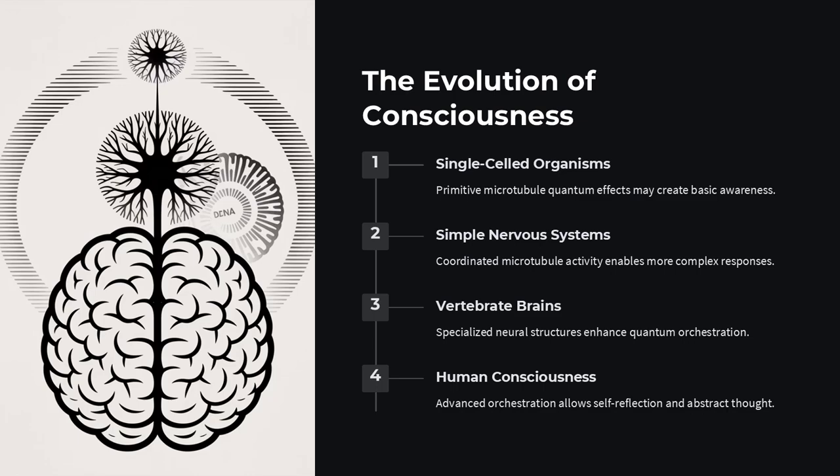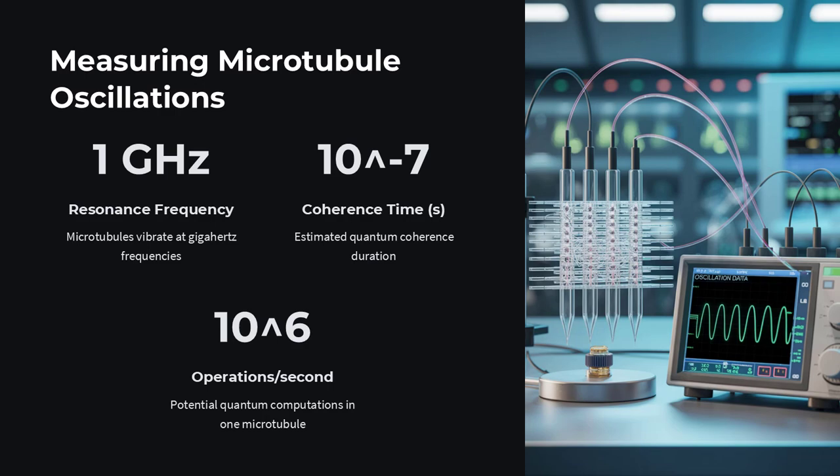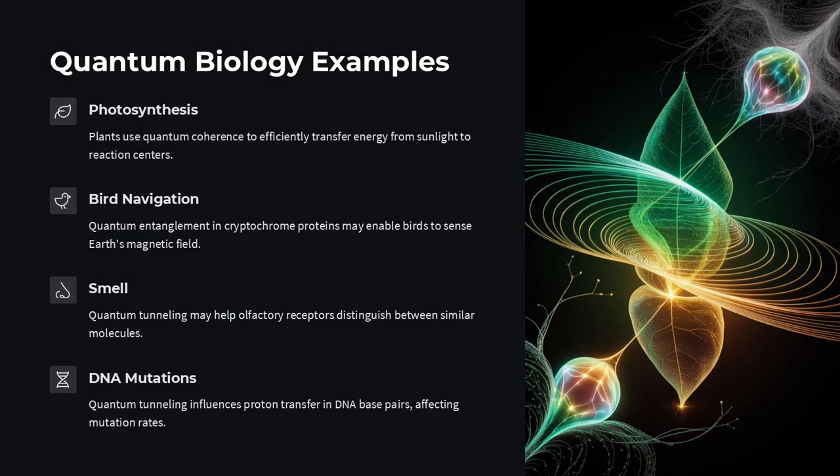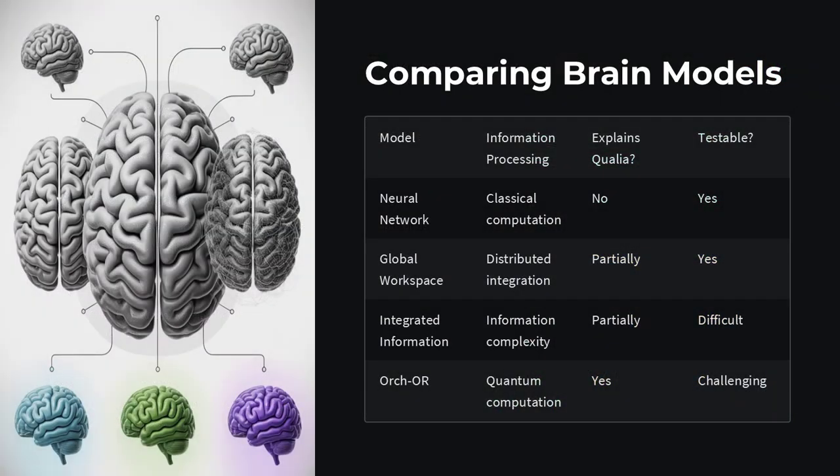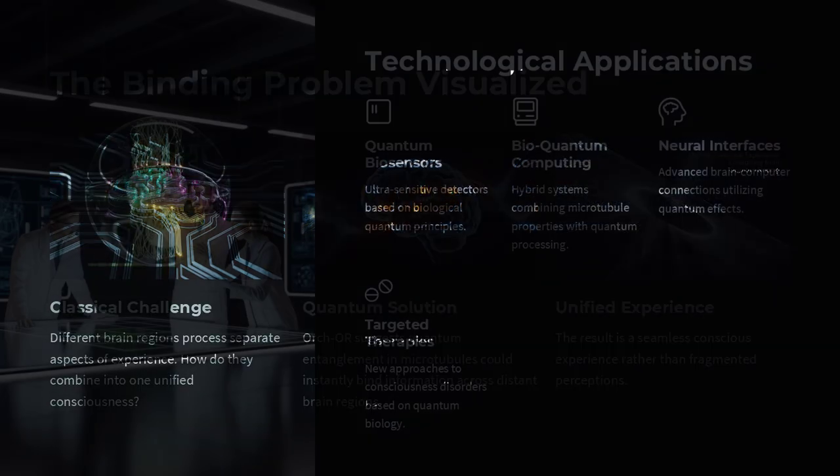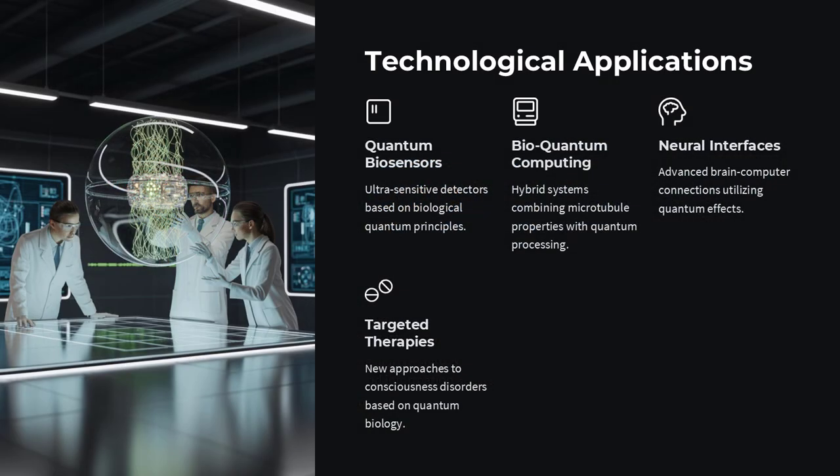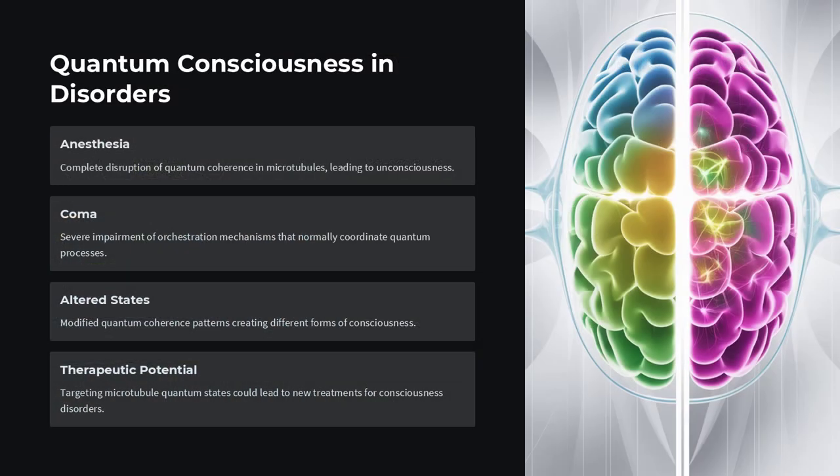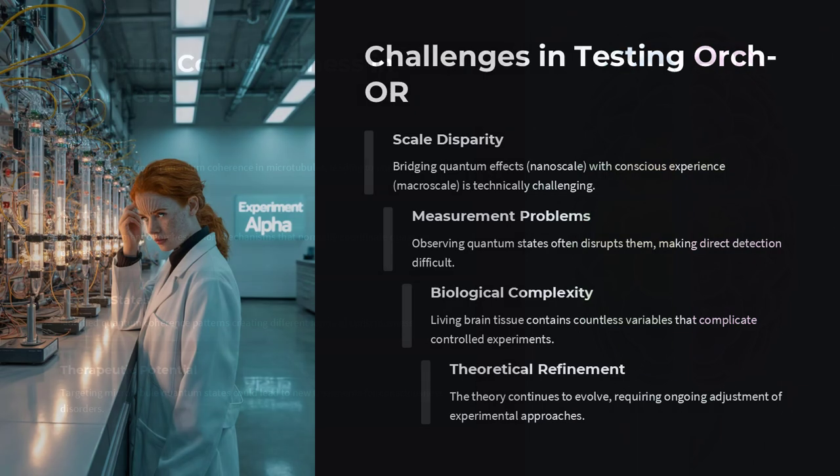What evidence supports this bold claim? Hameroff's team has measured electrical oscillations in microtubules and found fast rhythms that some argue exceed what classical models predict. They point to experiments where anesthetic molecules known to switch off consciousness bind preferentially to tubulin sites, suggesting a quantum-sensitive mechanism. Yet skeptics ask: are these effects truly quantum or simply classical biochemistry in disguise?